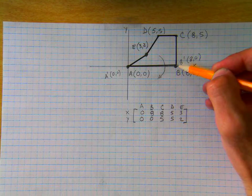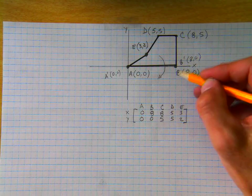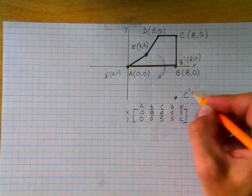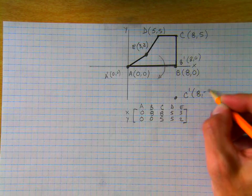Point C, instead of being up 5, goes down 5. 1, 2, 3, 4, 5. And so this point, C prime, becomes 8, negative 5.